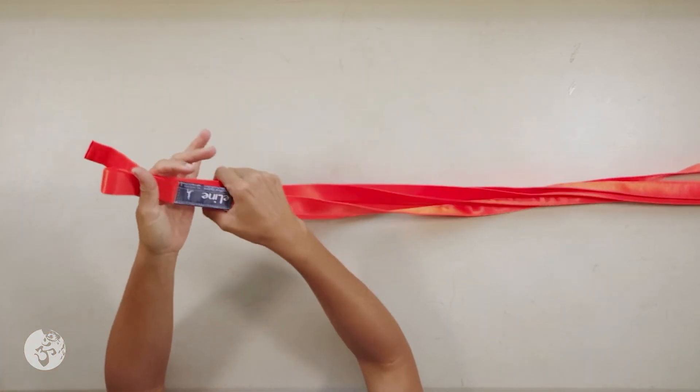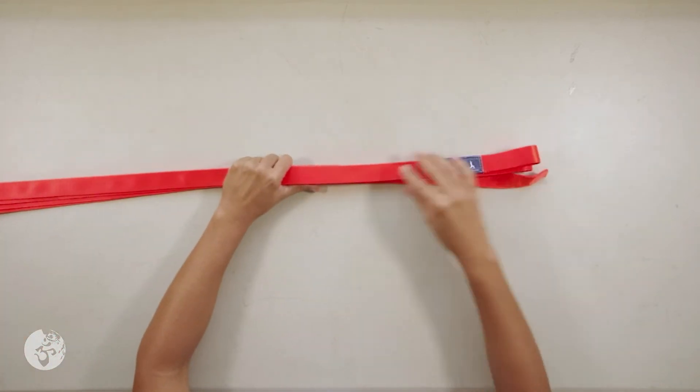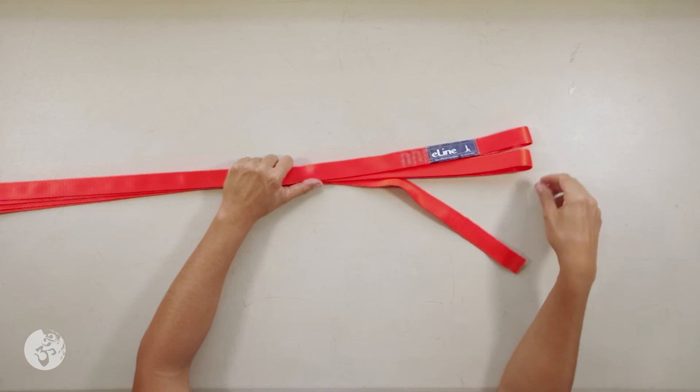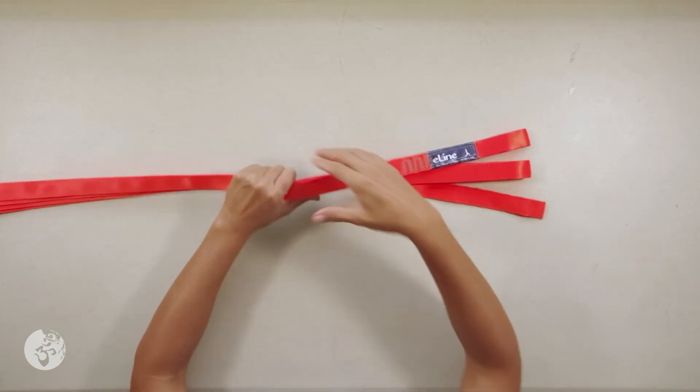So again, we can take all three pieces on one side. So the middle of the line, the loop side and the tail end of the line.